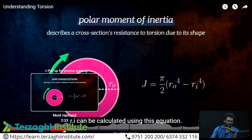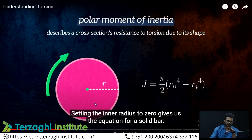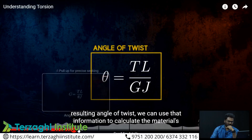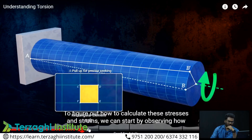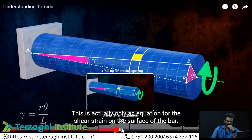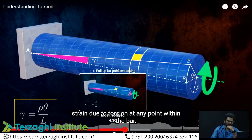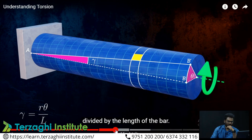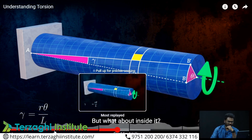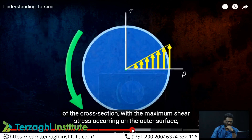The polar moment of inertia J is equal to Ixx plus Iyy. Regarding shear stress: at the center of the cross-section, shear stress is zero. Moving outward, shear stress increases toward the outer periphery.